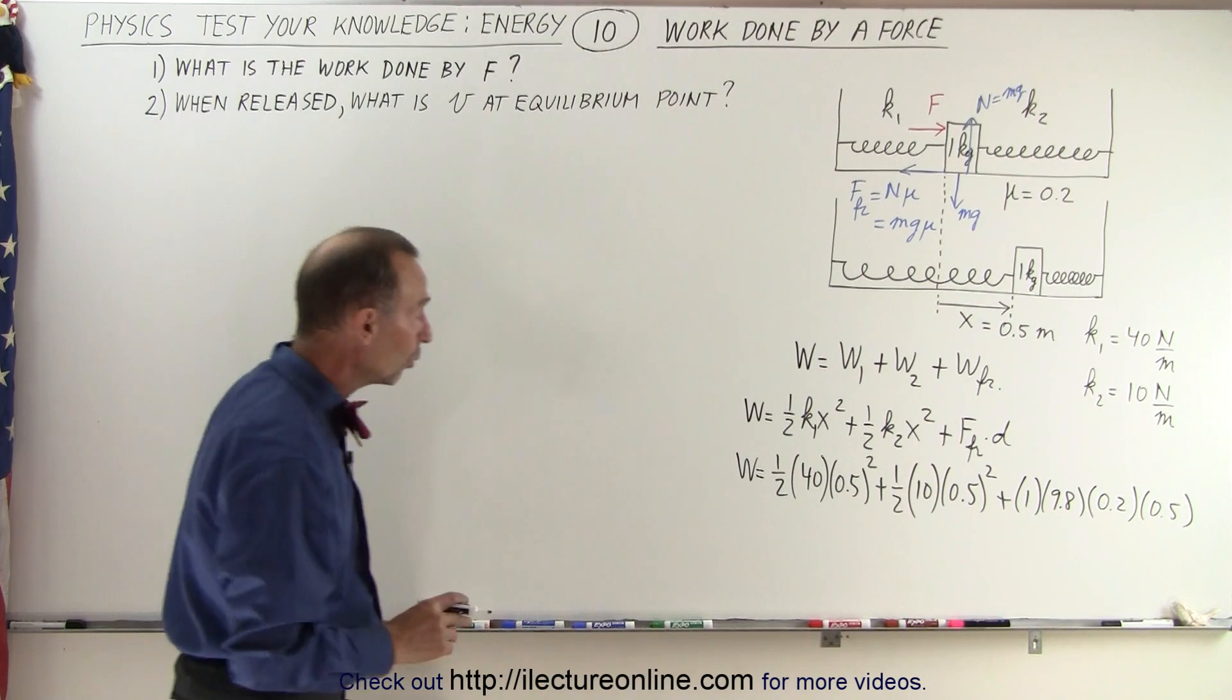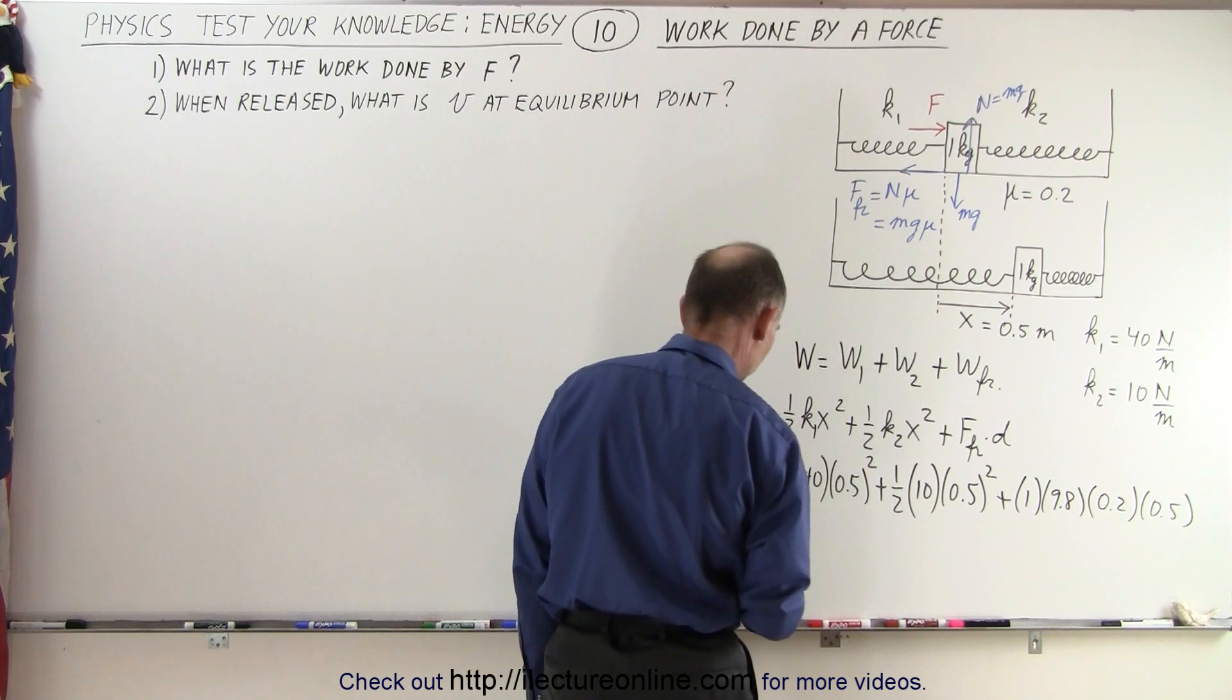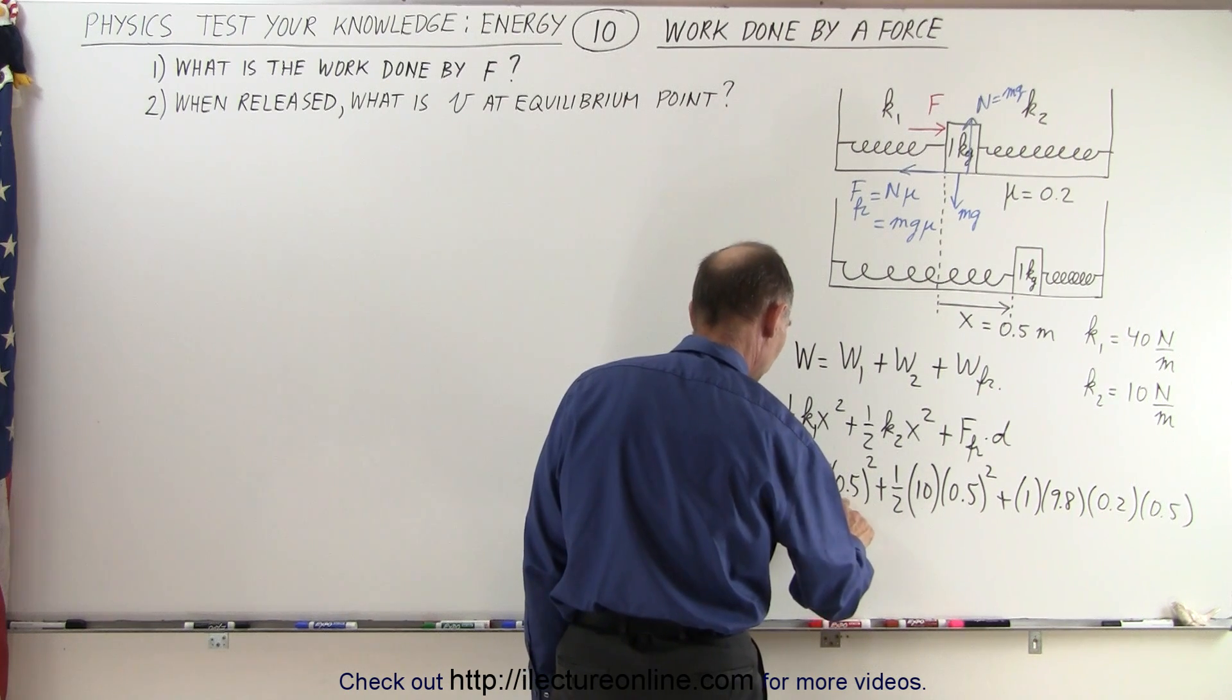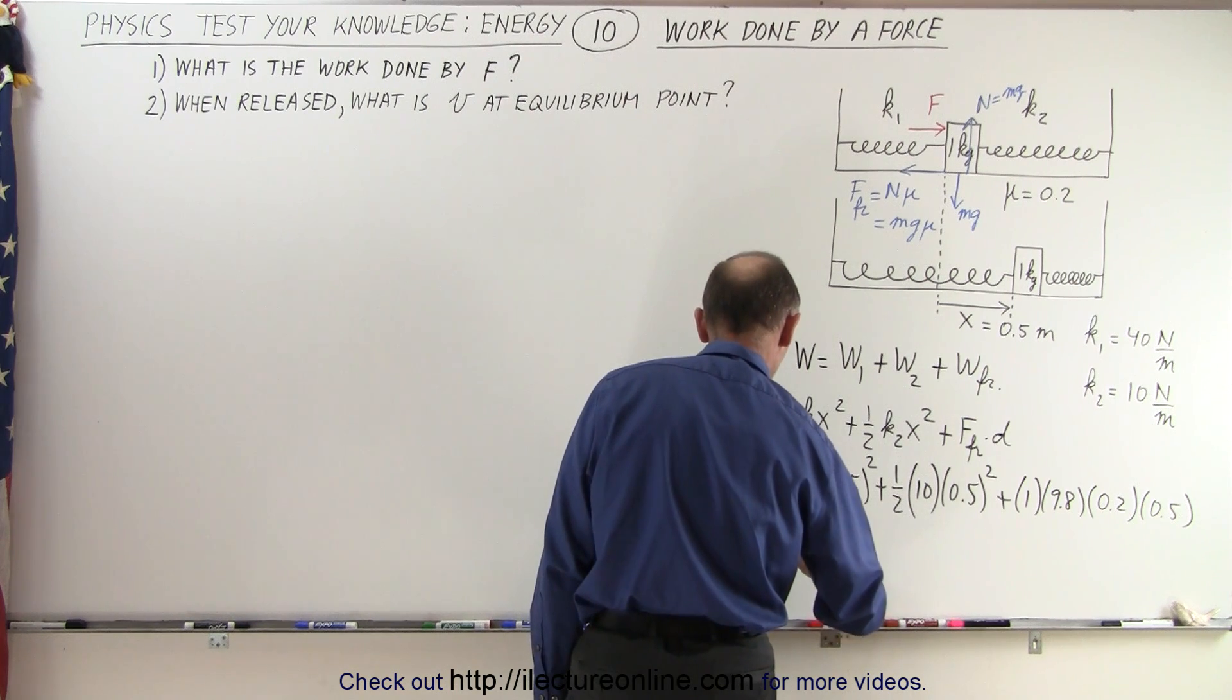Calculating what each of those are, so the work done by the force to push the block 0.5 meters is: this would be 0.25 times 40 which is 10 times 1/2 which is 5 joules.